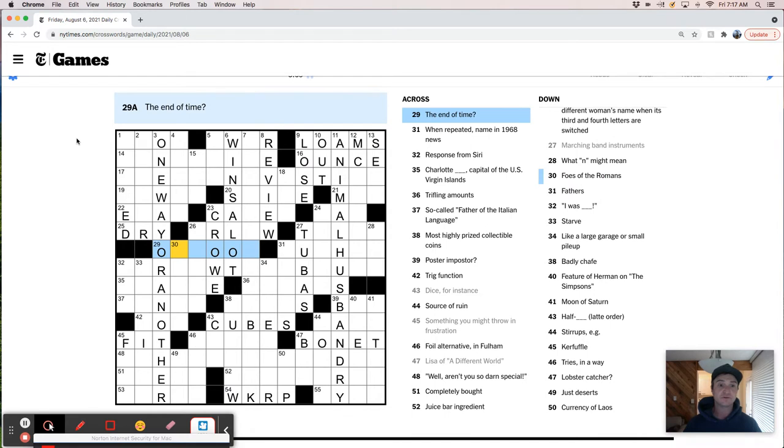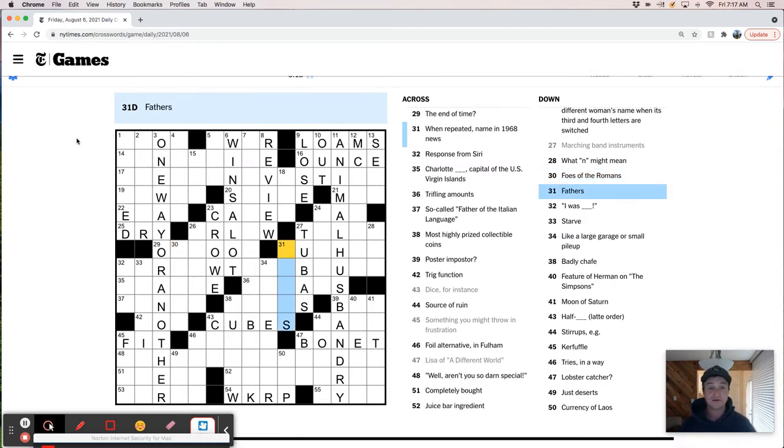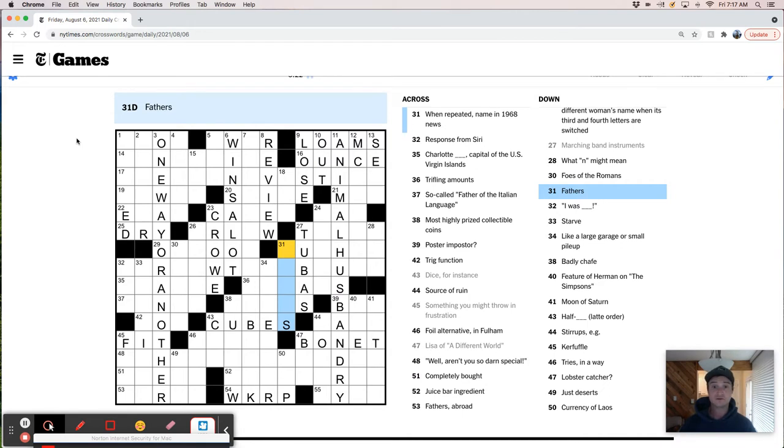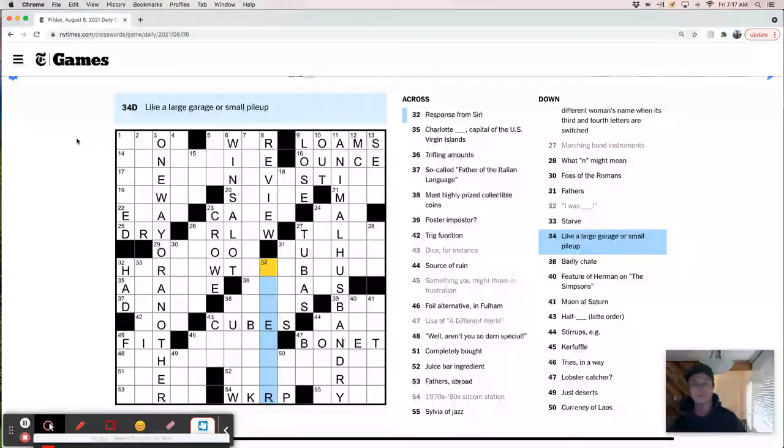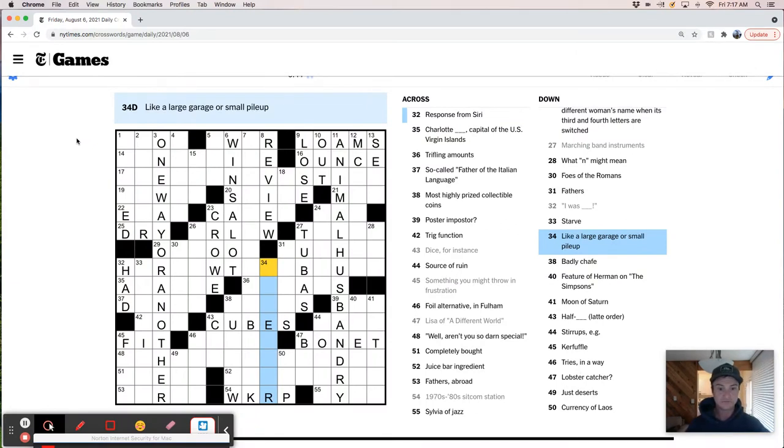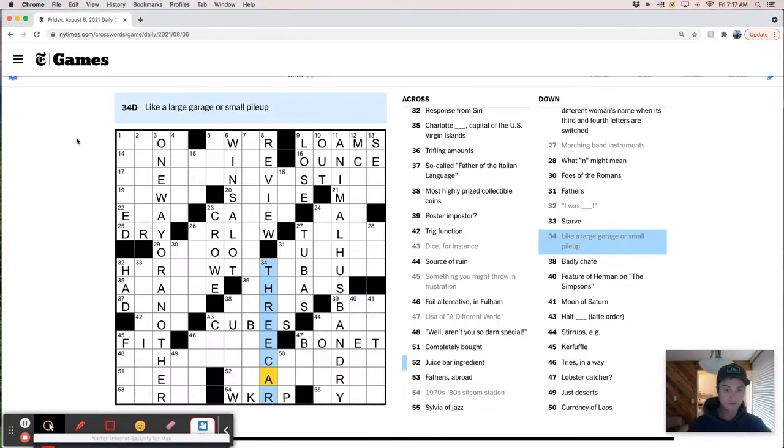What N might mean. Boas of the Romans. The Gauls. Fathers. I was had. What's this? Responsive mystery. Starve. Oh, so this is like. Three car. Adley chafe. Rub raw. Feature of Herman on the Simpsons. But one arm. That's a pretty. I'm a major Simpsons fan. And I. That's still. That's a very tough one.